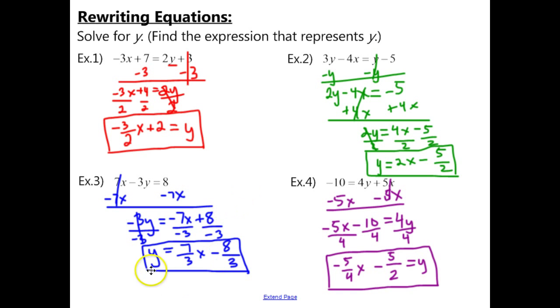For example 3, y equals 7 thirds x minus 8 thirds. And then for example 4, negative 5 fourths x minus 5 halves equals y.